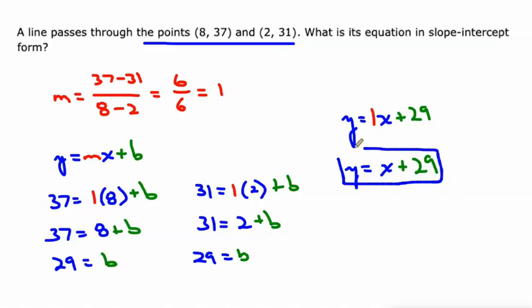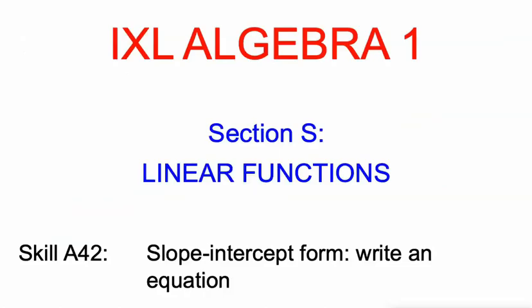So when we're not given the slope or the y-intercept, use the points to find the slope, and then use the slope and one of the points to find the y-intercept. Good luck on writing an equation in Section S of IXL's Algebra 1 skills. Let me know how it goes in the comments.